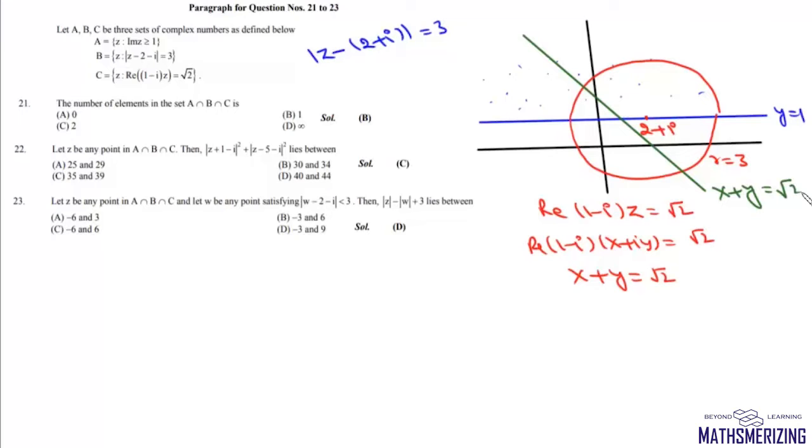Now first question is number of elements in the set A intersection B intersection C. Now we need to find all the points which lie in all the three sets. It should lie on this circle, it should also lie on this line and it should also lie in this region. There is only one such point possible. So number of elements in this set A intersection B intersection C is simply 1 and that's your option D.